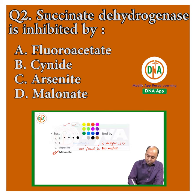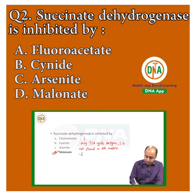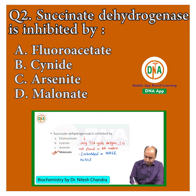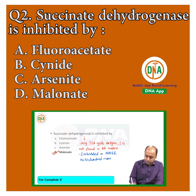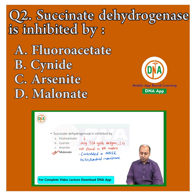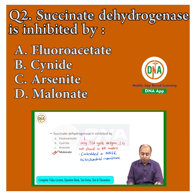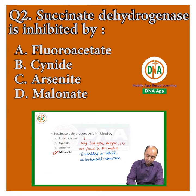If it is not found in the mitochondrial matrix, where is it? It is embedded in the inner mitochondrial membrane. So, succinate dehydrogenase is unique among the enzymes of the Krebs cycle — it is not present in the matrix; rather, it is embedded in the inner mitochondrial membrane.